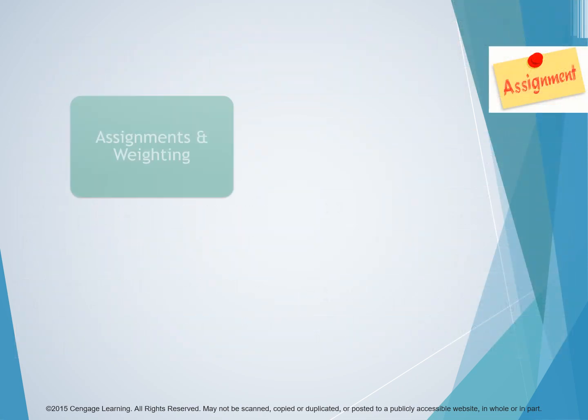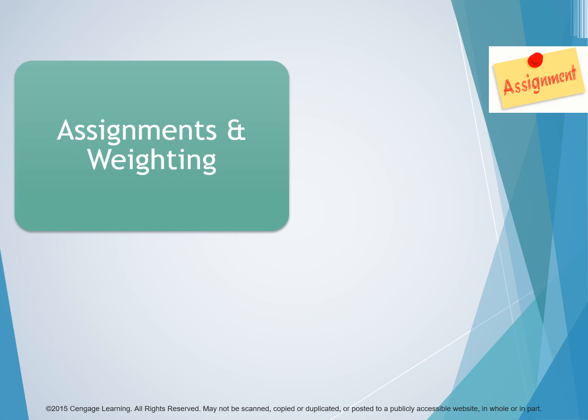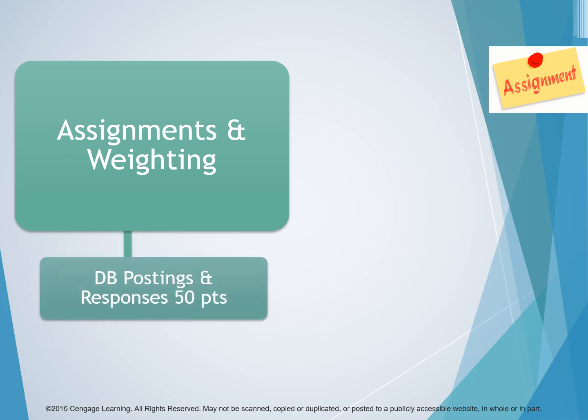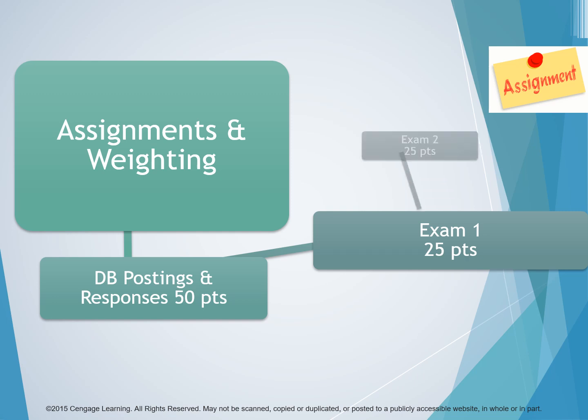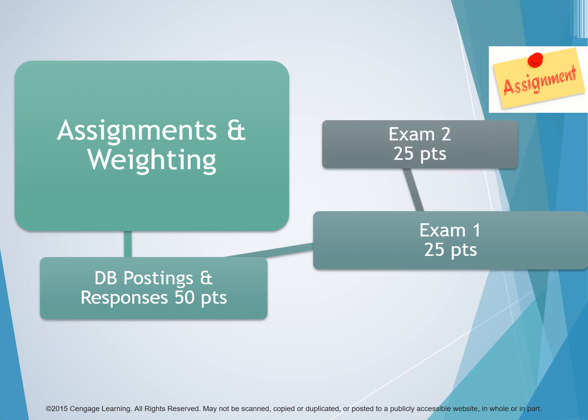Assignments and weightings are shown in the following chart. Rubrics and grading guidelines are listed in the course syllabus. There are five discussion board postings and responses — each post is worth eight points and each response is worth two points, for a total of 50 points. There are also two exams worth 25 points each, for a total of 50 points.